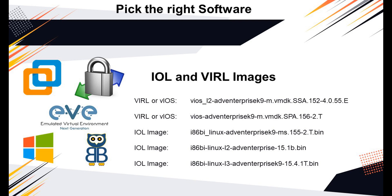IOL images refer to the Linux version, and these images are compiled for i386 architecture. IOU refers to the Unix version, and these images are compiled for SPARC architecture. The term IOU usually refers to IOL2.